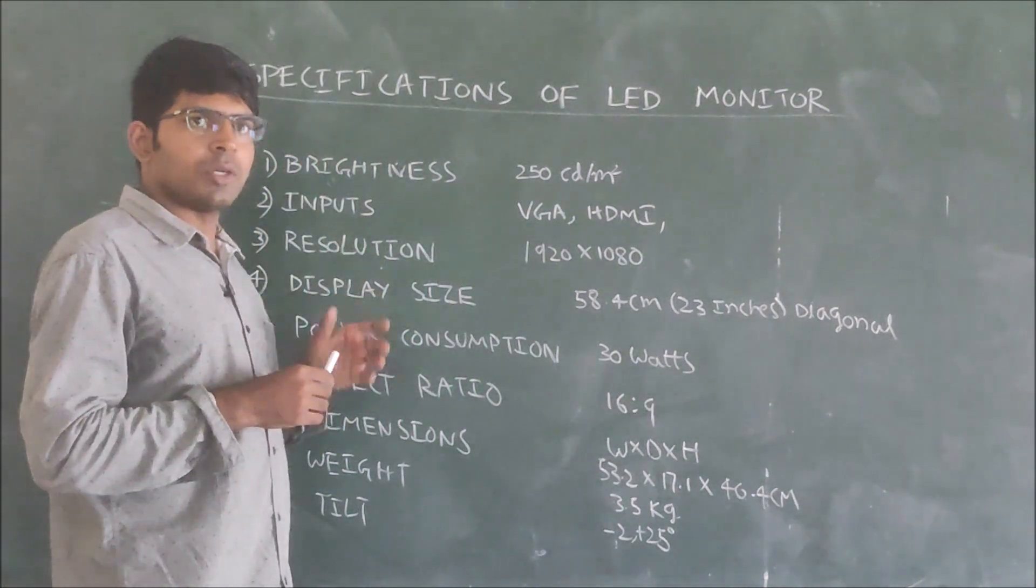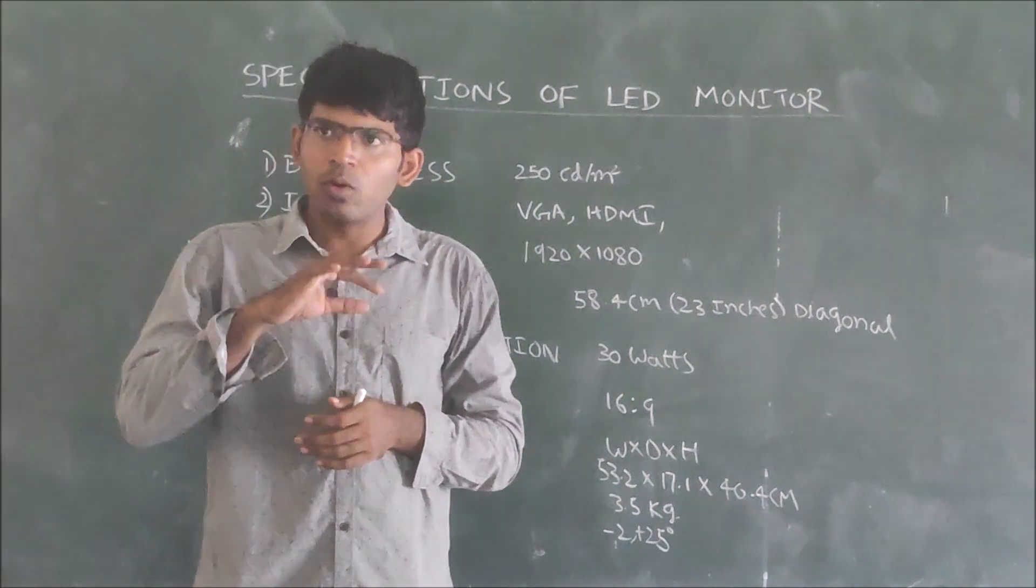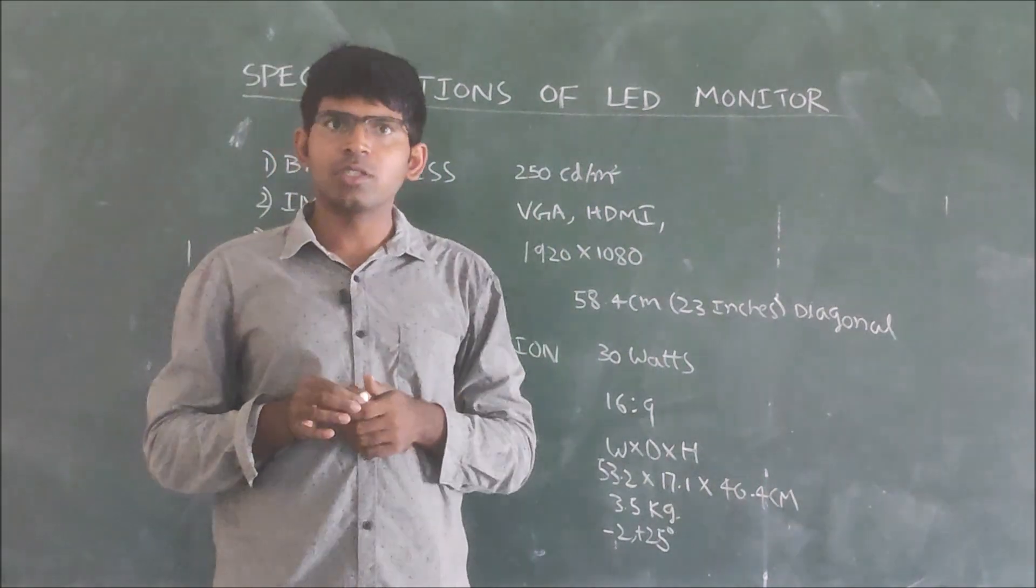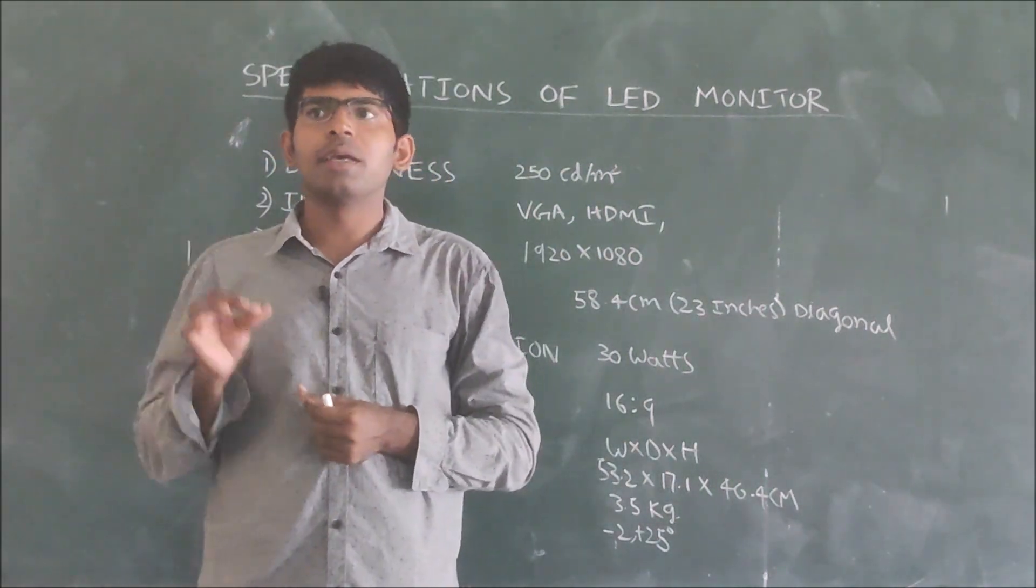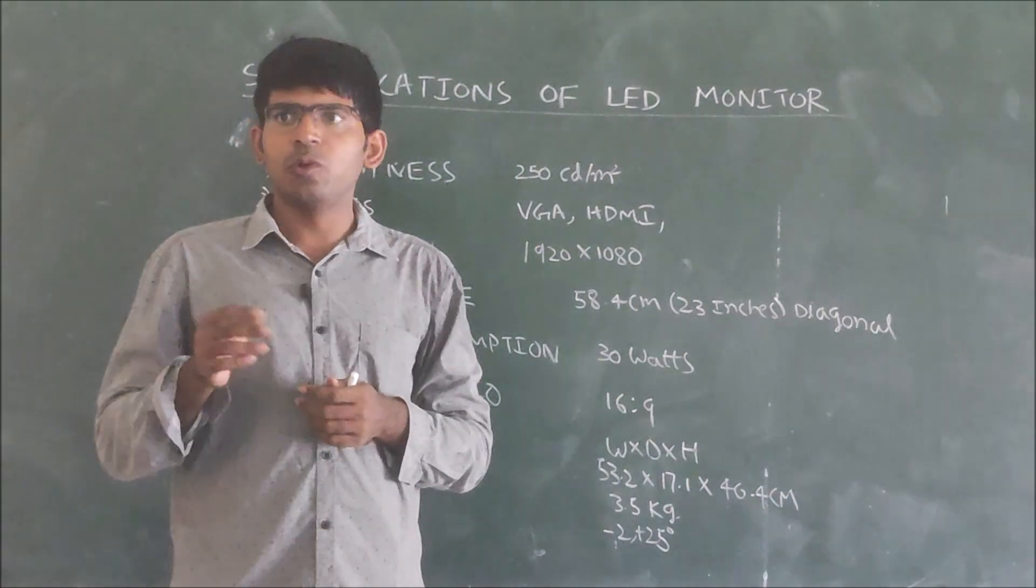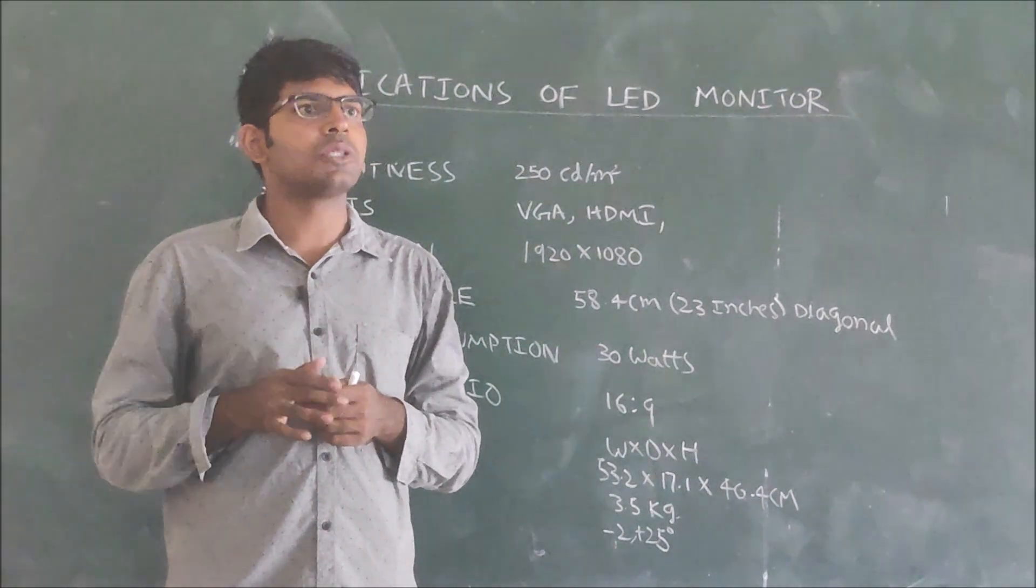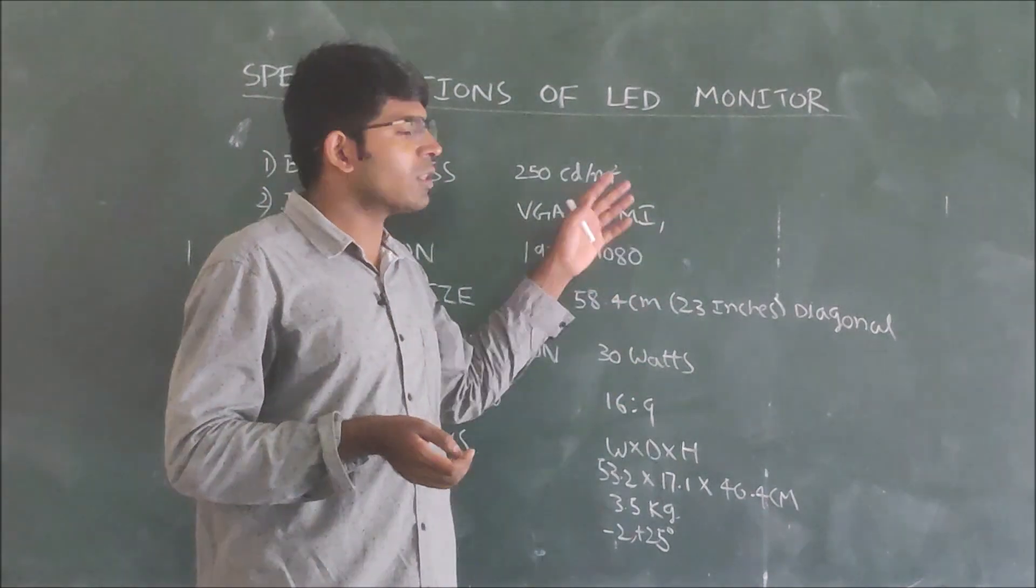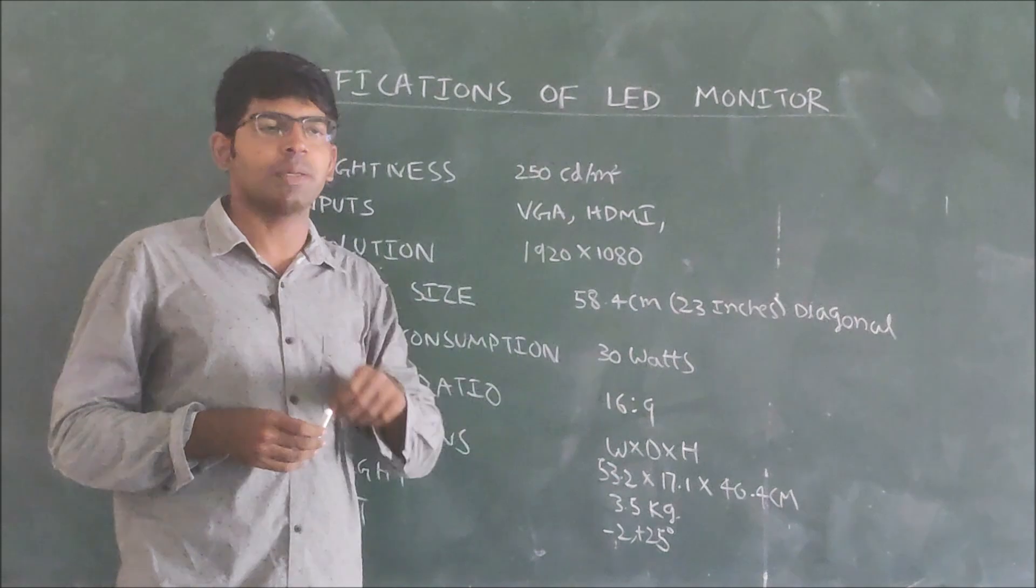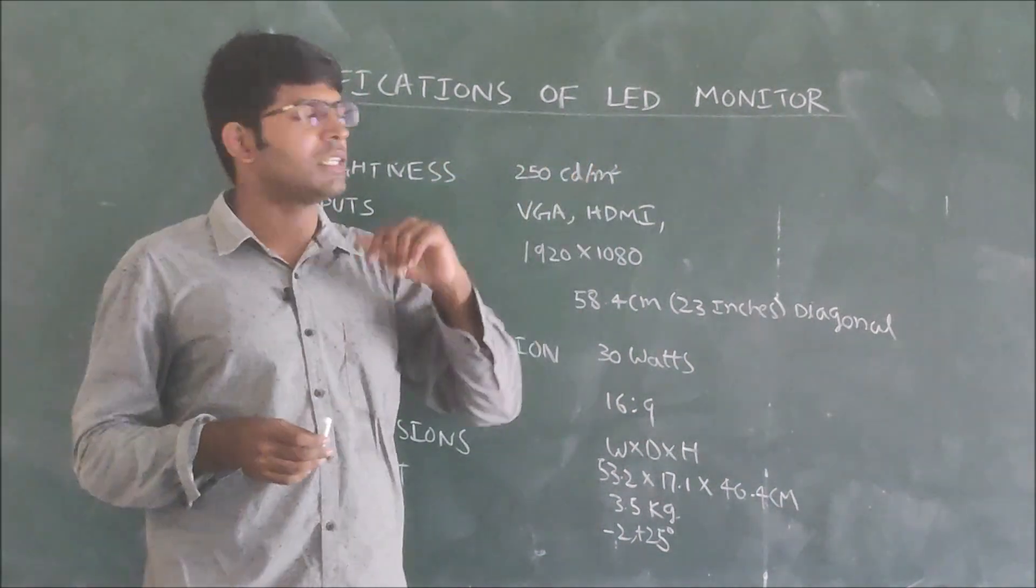And what inputs we can connect? Previously, in olden days, only VGA was supported. Now HDMI also they are supporting. HDMI will give very good resolution when you are connecting. If you see nowadays high resolution channels, through HDMI only we can connect. So what are the inputs it can accept? VGA and HDMI.